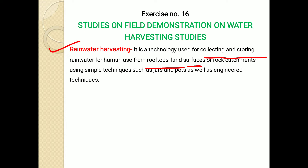Also, the rainfall from the land surfaces and rock catchment, using simple techniques such as jars and pots, as well as engineered techniques — a barrel, farm pond, and any other — that is known as rainwater harvesting. This collected water is stored, then recycled and reused.